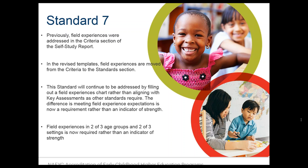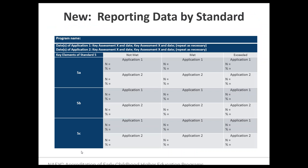Circling back to a question about reporting data by standard: yes, in the annual report you assess one standard per year. Instead of one assessment per year, we're now at one standard per year. And regarding the data table's 'exceeded' column — one commenter noted that for their program, 'exceeded' means the students surpassed the benchmark set by the advisory program. That is a helpful way of clarifying that conversation.